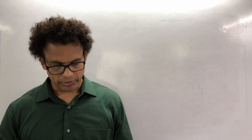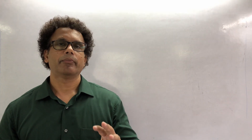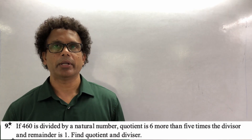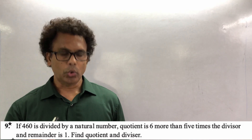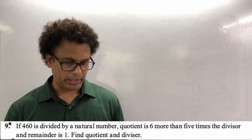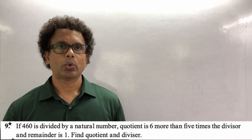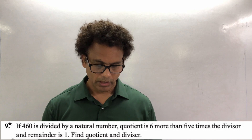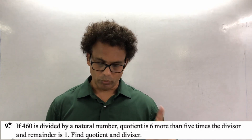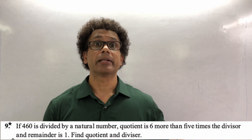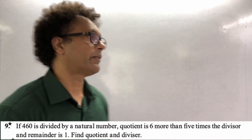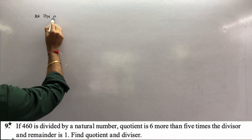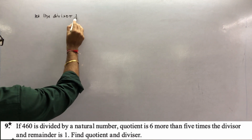Now check sum number 9 - very simple. The question: if 460 is divided by a natural number, the quotient is 6 more than 5 times the divisor, and the remainder is 1. Find the quotient and the divisor. Quotient is 6 more than 5 times the divisor - so divisor comes first. We assume: let the divisor be x. Therefore the quotient is 5x + 6.